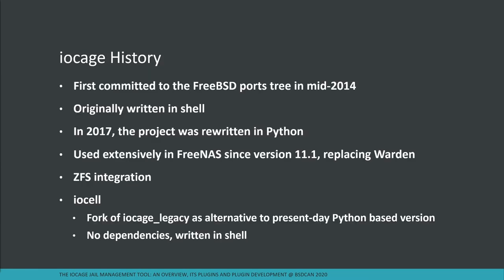Now for some IOCAGE history. It was first committed to the FreeBSD ports tree in mid-2014, originally written in shell like EasyJail. As of 2017 it was rewritten entirely in Python. It's been used extensively in FreeNAS since version 11.1, replacing Warden. It has extensive ZFS integration — in fact it requires ZFS. There's also IOCell, a fork of IOCAGE Legacy (the shell version), used as an alternative — no dependencies, written entirely in shell, available in the ports tree, doing most of the same things.